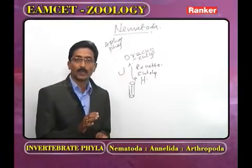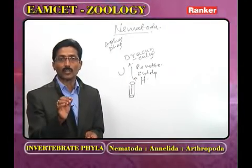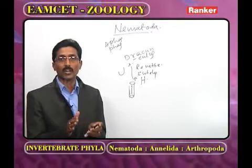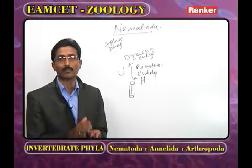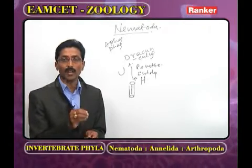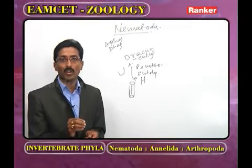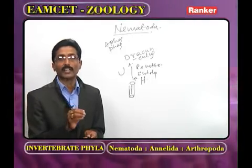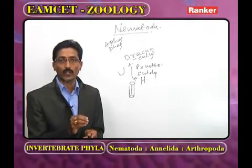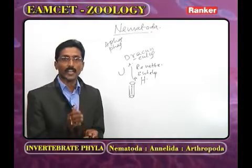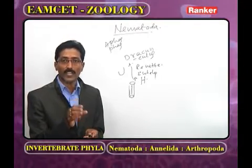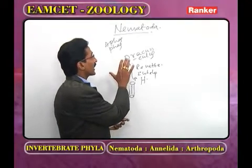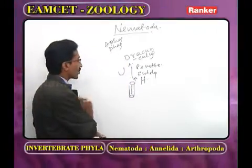The most important character to classify an animal under Nematoda is the pseudocoelom. The body cavity is not lined by mesodermal epithelia. The pseudocoelom is a derivative of the blastocoel — also called the primary body cavity or segmentation cavity. There is no circulatory system; instead, the pseudocoelomic fluid performs transportation, gives support, and acts as a hydraulic or hydrostatic skeleton.